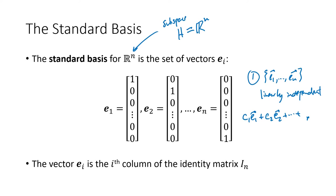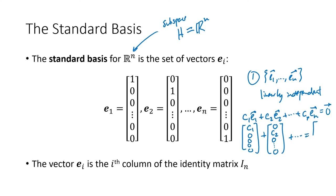...then c1 times e1 is going to have a c1 in the first spot and zeros everywhere else. c2 times e2 has a c2 in the second spot and zeros everywhere else. When we add all that up, we get c1, c2, c3 all the way up through cn. The only way that could equal the zero vector is if all of those c's are zero — c1 would have to be zero, c2 would have to be zero, and so on. So that's the first of my two conditions.